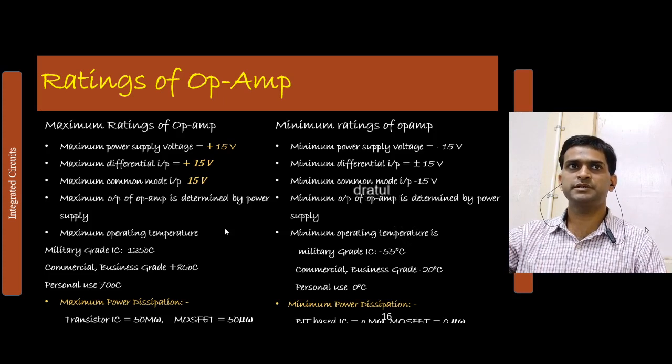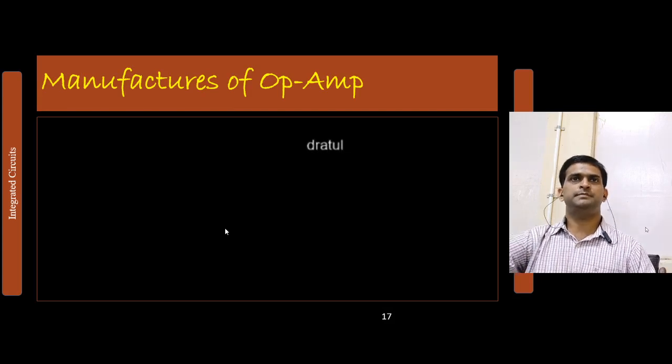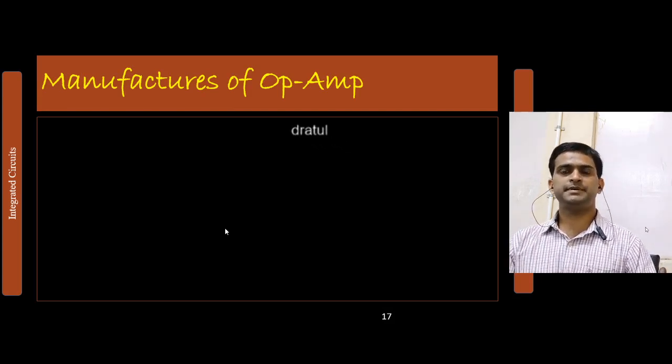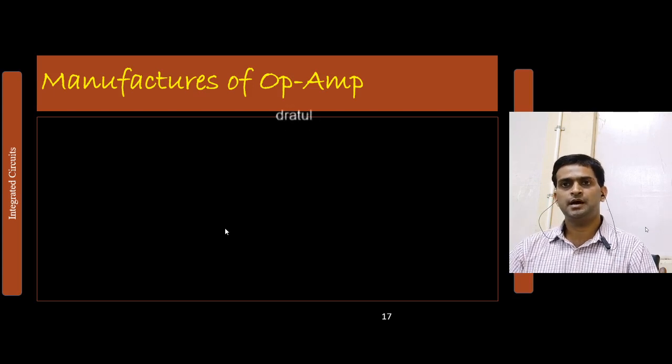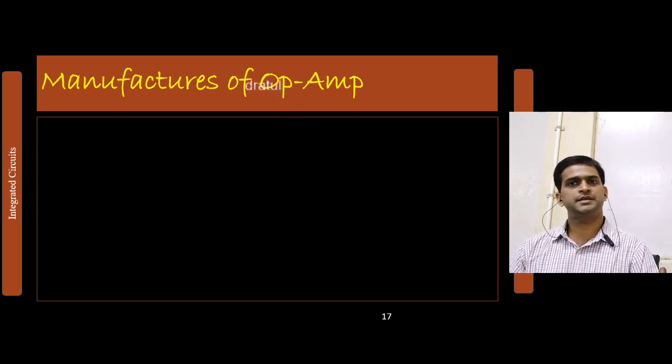Next thing I would like to discuss is the manufacturers of the operational amplifier. So, operational amplifier ICs, the number of IC is 741, and total number of pins are 8.